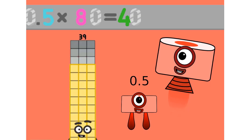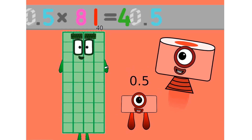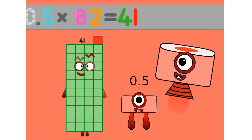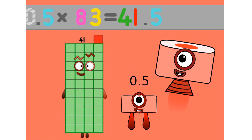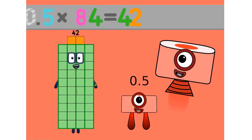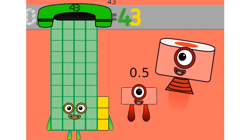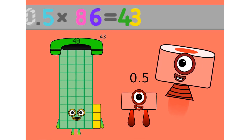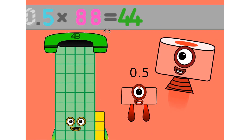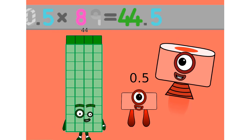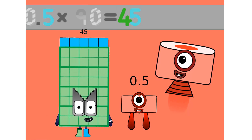0.5 times 80 equals 40. 0.5 times 81 equals 40.5. 0.5 times 82 equals 41. 0.5 times 83 equals 41.5. 0.5 times 84 equals 42. 0.5 times 85 equals 42.5. 0.5 times 86 equals 43. 0.5 times 87 equals 43.5. 0.5 times 88 equals 44. 0.5 times 89 equals 44.5. 0.5 times 90 equals 45.